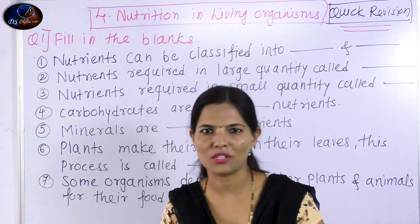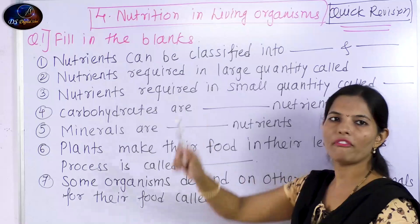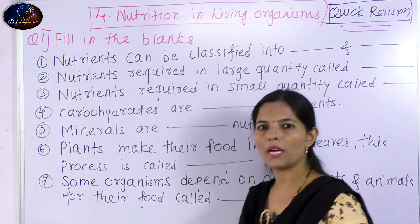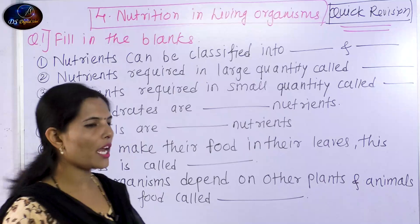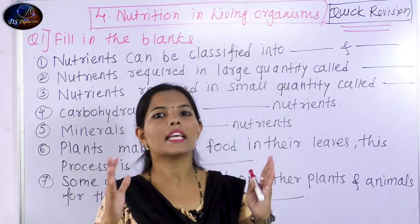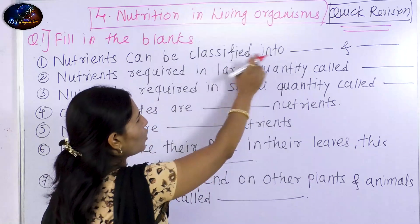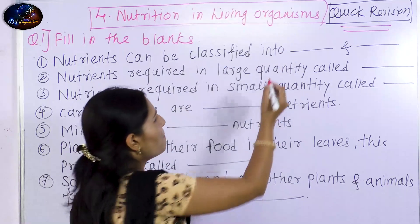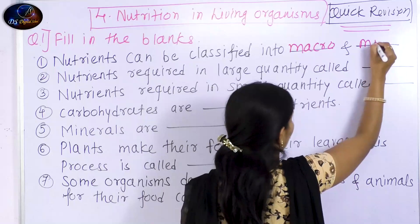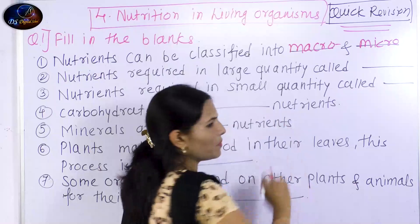Let's see the first question — fill in the blanks. The question is: nutrients can be classified into how many parts? Nutrients are divided into two parts: macronutrients and micronutrients.